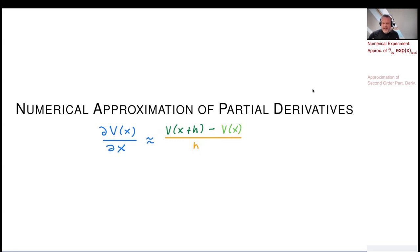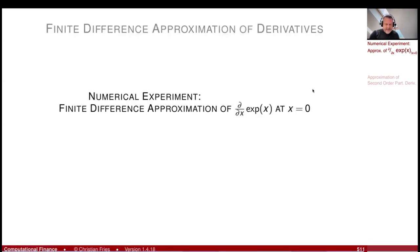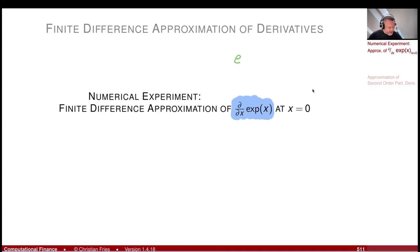We would like to take h as small as possible, but there is an issue that creates errors if we take h too small. I would like to show this using a numerical experiment where I calculate the partial derivative of a function — in this case, the simple exponential function.